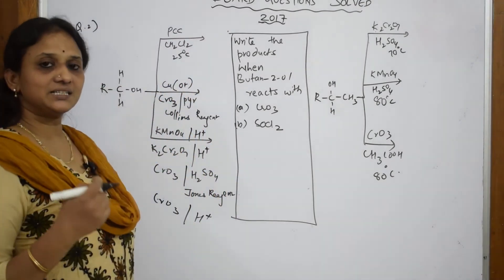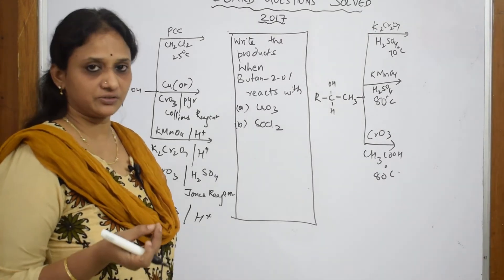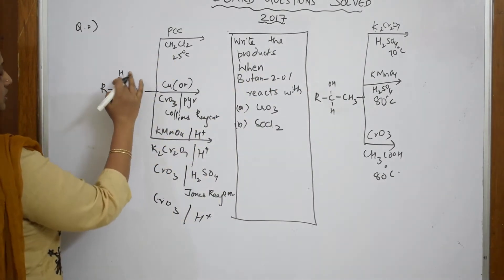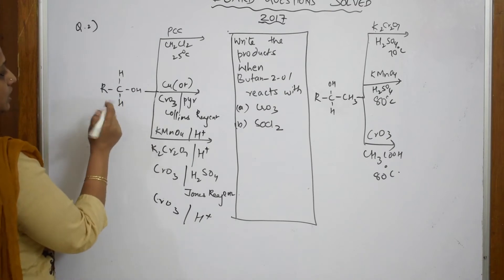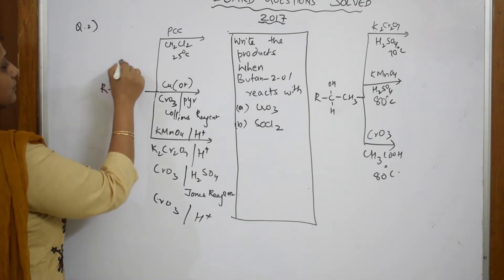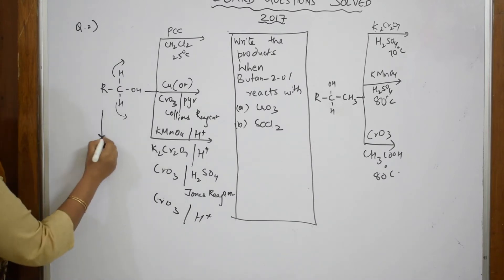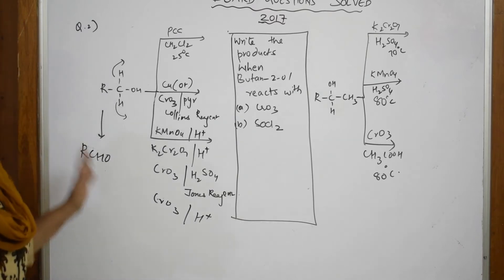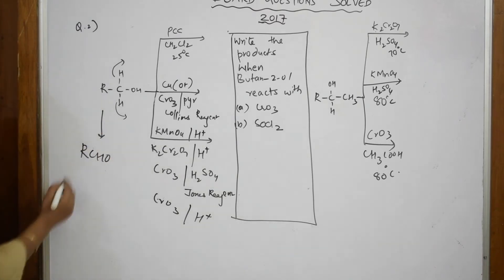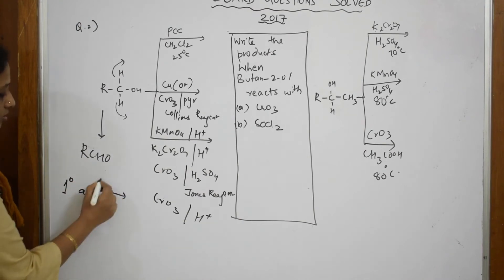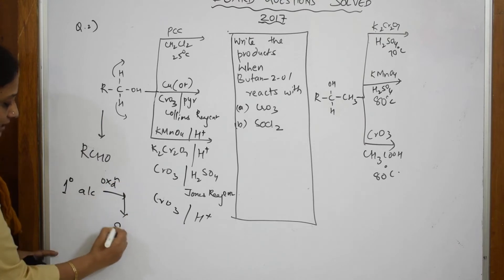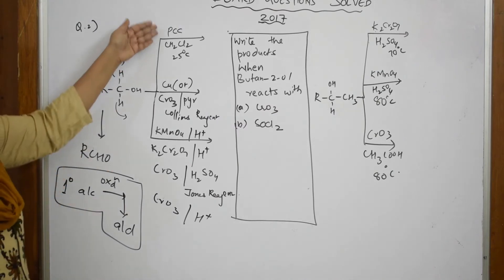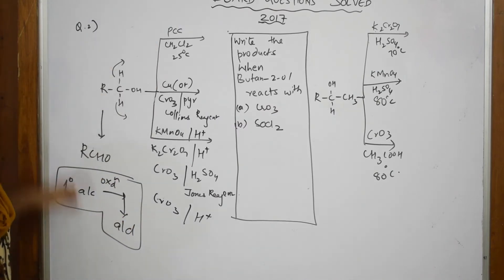The rule of an oxidizing agent is that it either adds oxygen or removes hydrogen. Whenever you find such reagents, you add oxygen or remove hydrogen. So if I take out the two hydrogens from a primary alcohol's –CH2OH group, I get a –CHO group. The conclusion: primary alcohols on oxidation give us aldehydes.